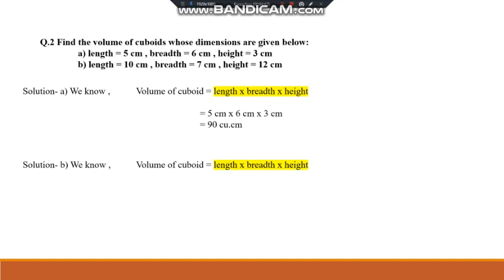Second sub-question: again using volume of cuboid formula, length × breadth × height. Substituting the values — length is 10 cm, breadth is 7 cm, and height is 12 cm. 10 × 7 = 70, and 70 × 12 = 840. Therefore, volume of cuboid is 840 cubic cm.